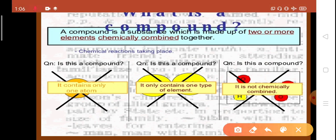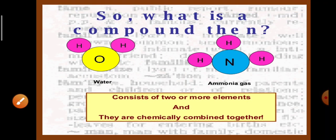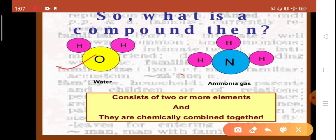Can we call a substance as a compound if it contains only one type of element? Or can we call a substance as a compound if it is not chemically combined? Obviously, the answer to these questions is no. Then, what is a compound? A compound is a substance which is made up of two or more elements chemically combined together in a fixed ratio. For example, water and ammonia gas.